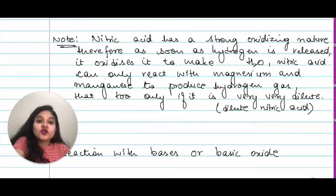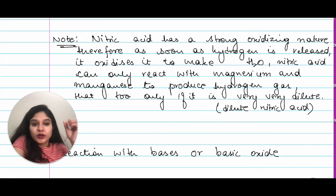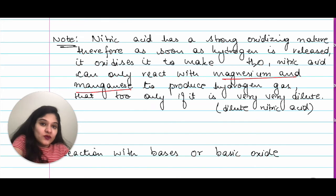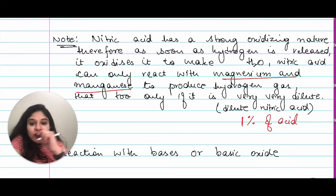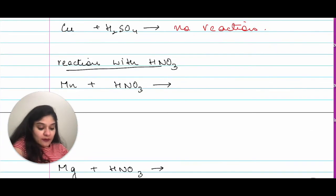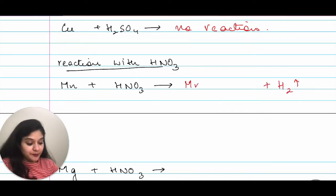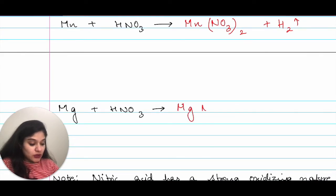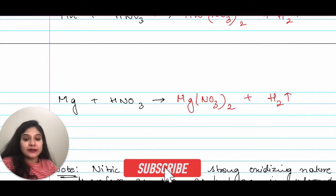Nitric acid is a strong oxidizing agent and oxidizes released hydrogen to make water. HNO₃ can only react with manganese and magnesium to produce hydrogen gas, and only when it is very dilute — about 1% acid. Reactions: Mn + HNO₃ → Mn(NO₃)₂ + H₂; Mg + HNO₃ → Mg(NO₃)₂ + H₂.